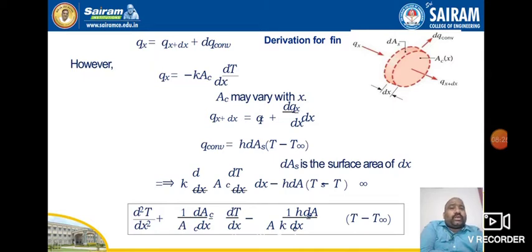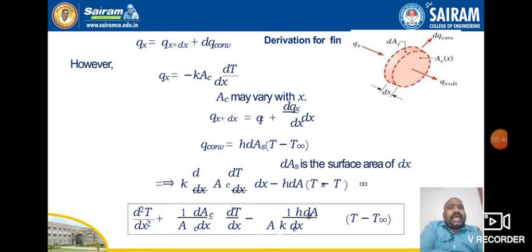There are two modes of heat transfer: conduction and convection. Taking the energy balance equation, and applying Fourier's law of heat conduction, we write QX = −KA·(dT/dX), where dT/dX is the temperature gradient, A is the cross-sectional area, K is the thermal conductivity, and the negative sign indicates the direction of decreasing temperature.